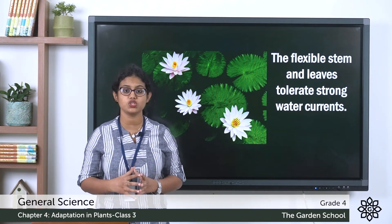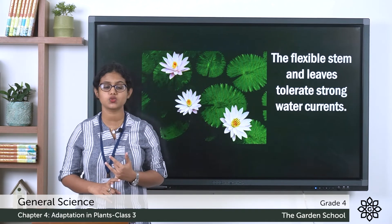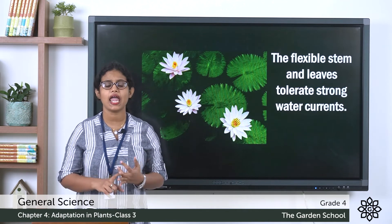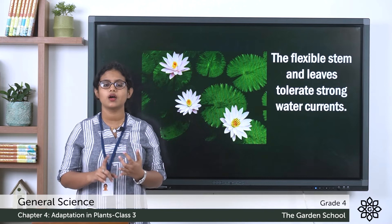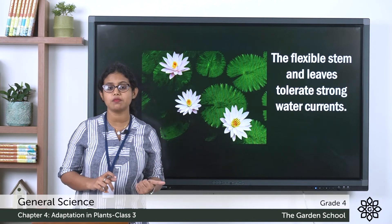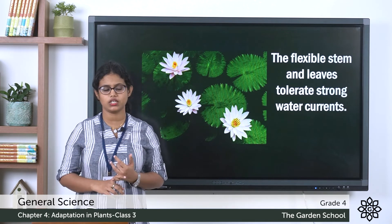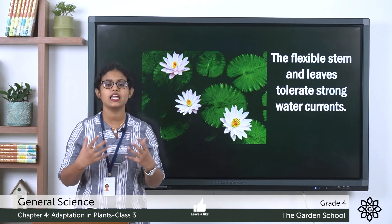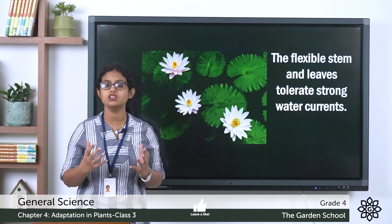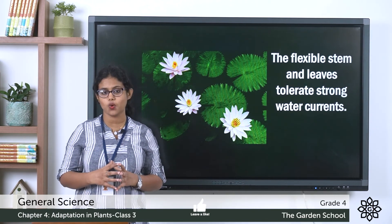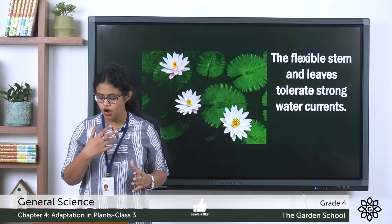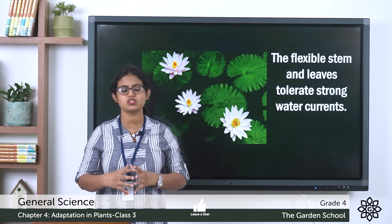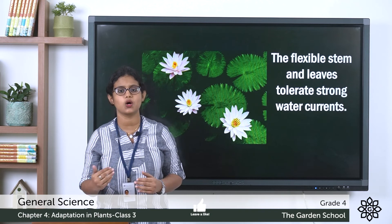To summarize the special features of aquatic plants: first, they have large floating leaves; second, they have air spaces in their stems and leaves that help them float; third, they have flexible stems and leaves that help them tolerate strong water currents. Additionally, the seeds of aquatic plants can float and reach far away places. These are the features that help aquatic plants survive in water.